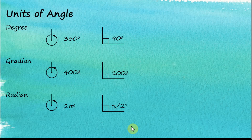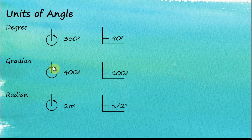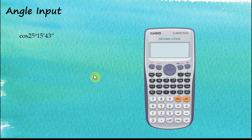In your calculator you can have three units of angles: degrees, gradients, and radians. For degrees, a complete circle is 360° and a quarter circle is 90°. For gradients, a complete circle is 400 gradients and a quarter circle is 100 gradients. For radians, a complete circle is 2π radians and a quarter circle is π/2 radians. These are the three units we can use for angle input in our calculator.